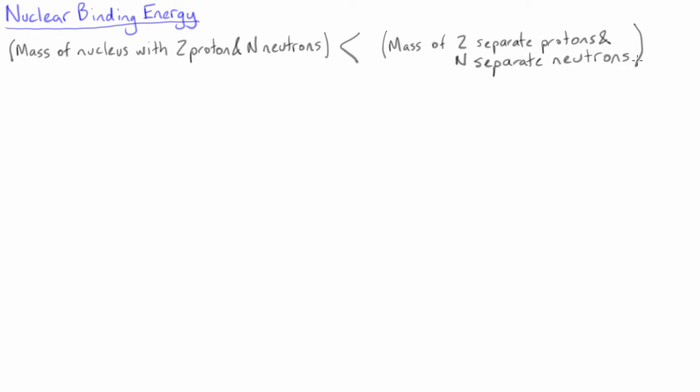We can understand binding energy by considering a nucleus with Z protons and N neutrons and imagining breaking it up into its constituents, that is Z separated protons and N separated neutrons.